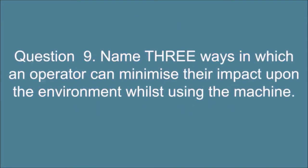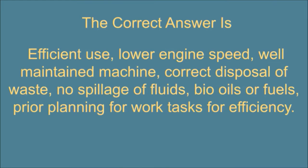Question 9. Name three ways in which an operator can minimize their impact upon the environment whilst using the machine. The correct answer is: efficient use, lower engine speed, well-maintained machine, correct disposal of waste, no spillage of fluids, bio-oils or fuels, prior planning for work tasks for efficiency.